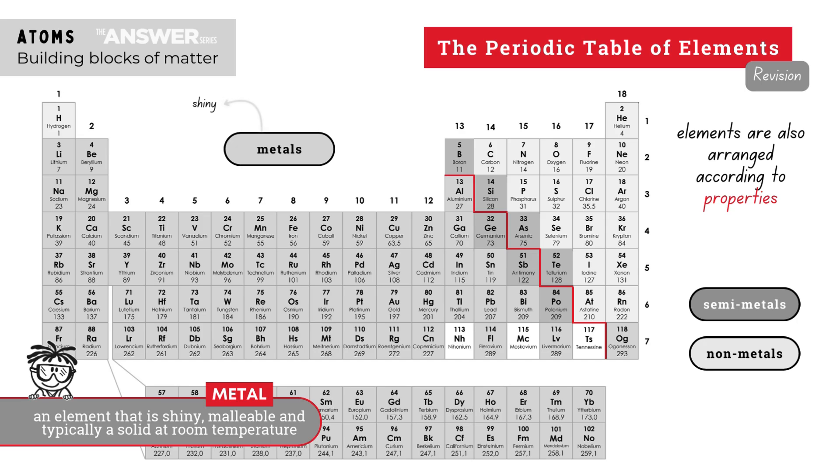Metals tend to be shiny, malleable which means they can be bent easily, and usually they're solids at room temperature that can conduct electricity and heat fairly well.